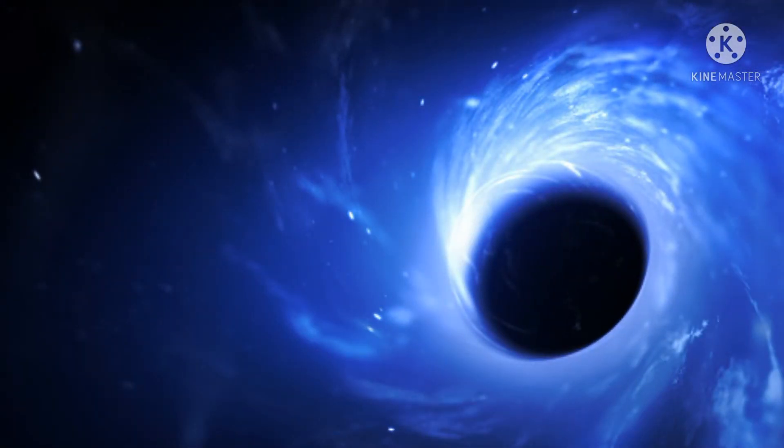If we have to escape from a black hole, we have to travel at the speed of light. The core of the black hole is made up of iron, and it is formed when there is a supernova explosion.